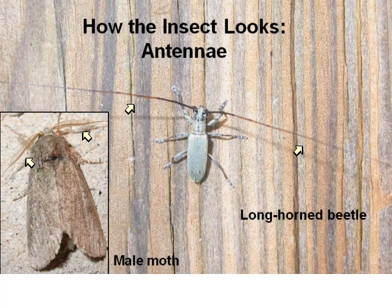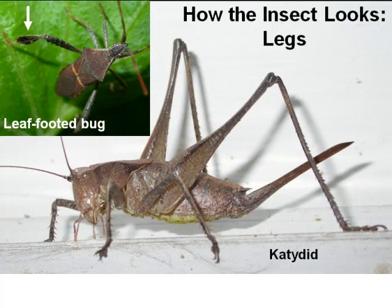Antennae are also important for identifying ants because of their elbowed antennae. Legs can also be helpful, though less important in most cases for identification. They can give you an idea of what the insect does — here we have a katydid with large jumping legs. However, for some insects such as leaf-footed bugs, the leg can actually be a characteristic identifying feature.